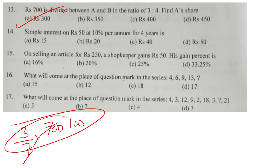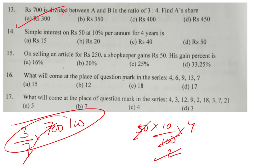Simple interest: using the formula with principal, rate, and time — cancel five, four gives twenty. That is the correct answer.